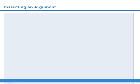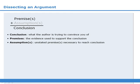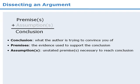In the last lesson, we learned that arguments on the GMAT typically consist of premises, unstated assumptions, and conclusions. Now, in tackling critical reasoning questions, it's very important to be able to identify these components in each argument.